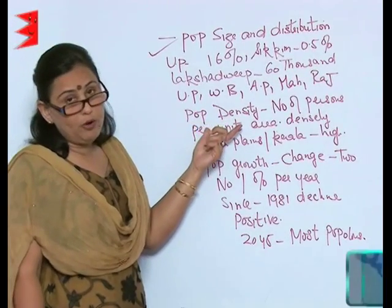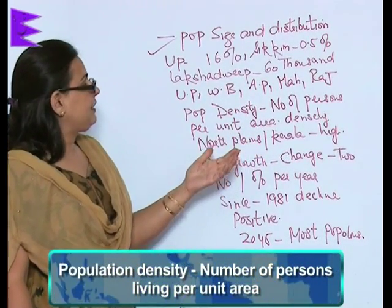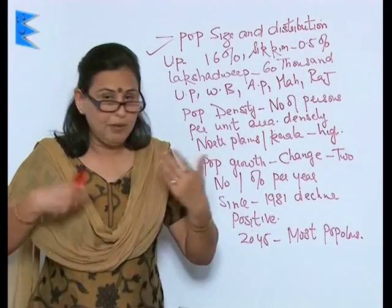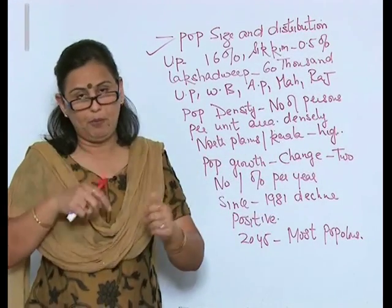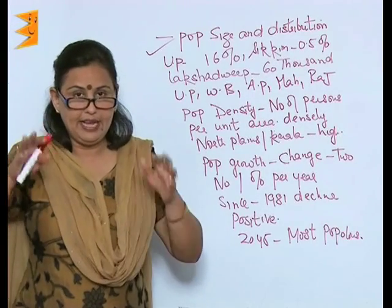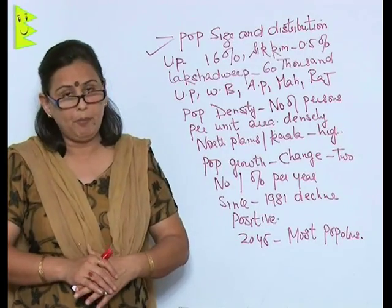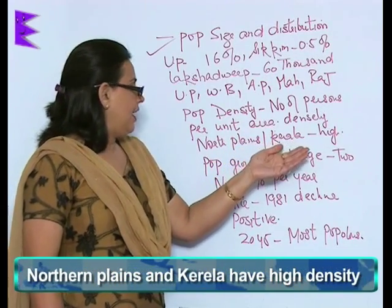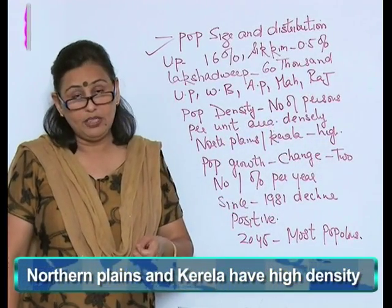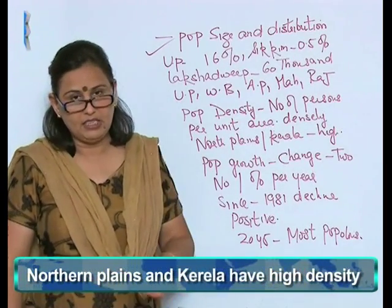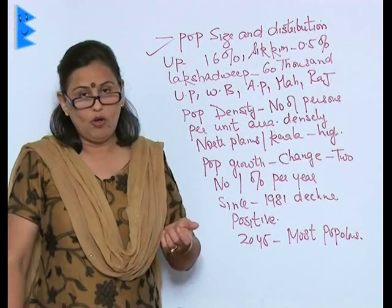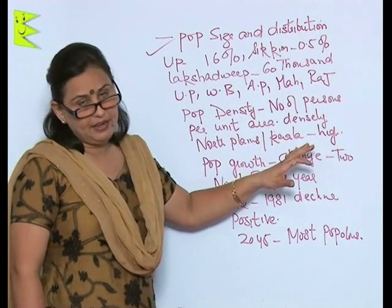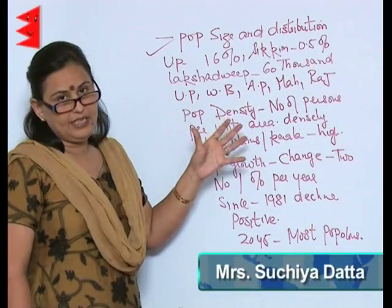Population density refers to the number of persons living per unit area. If more people live there, it is called a densely populated area; if fewer, it is sparsely populated. In India, the northern plains and Kerala have high density, due to fertile land and lots of employment opportunities.